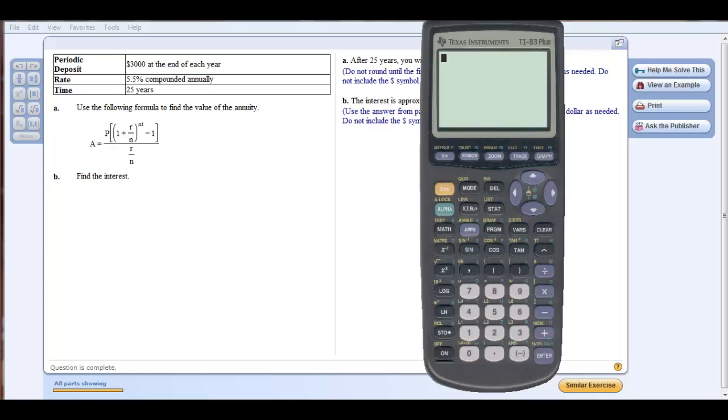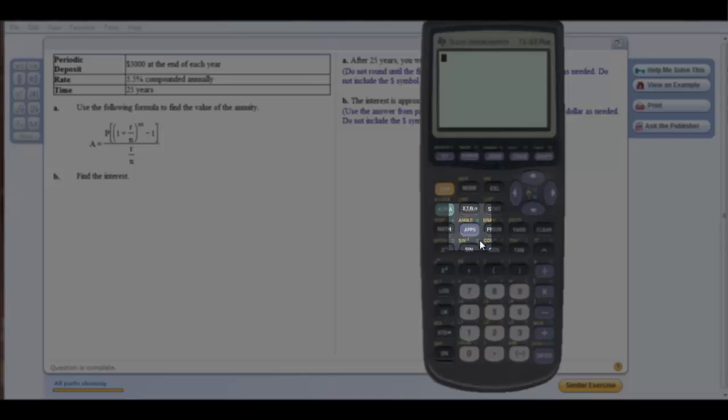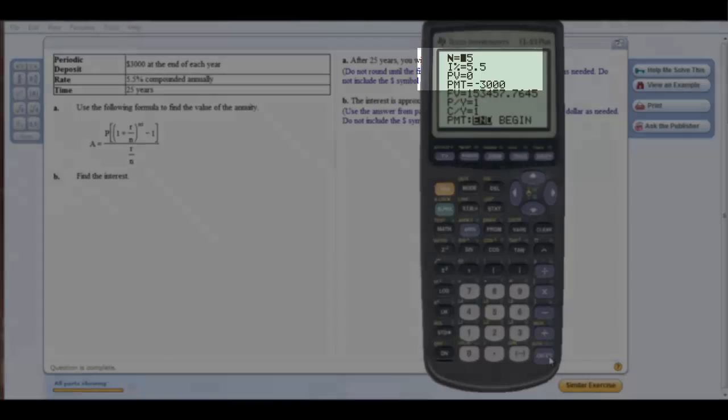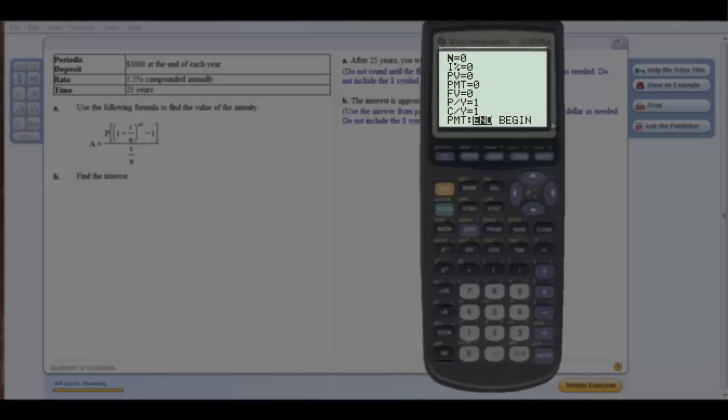I want to demonstrate solving an annuity problem using the TI-83 or 84 financial application. To do this, you start off by pressing the Apps button, and we select Finance, and then TMV Solver. We get the following screen.